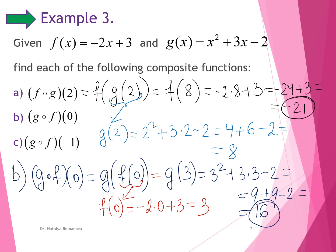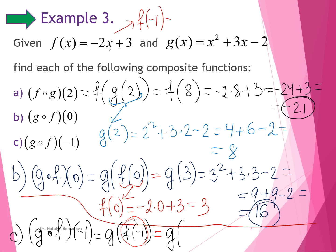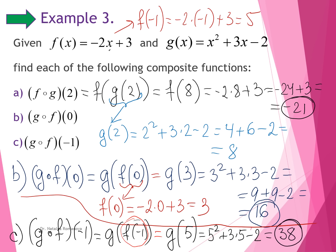Example c: we find the composition of g and f at x equals negative 1, written as g of f of negative 1. The inner function f of negative 1 equals negative 2 times negative 1 plus 3 equals 2 plus 3 equals 5. Now g of 5 equals 5 squared plus 3 times 5 minus 2 equals 25 plus 15 minus 2 equals 38. So the answer for example c is 38.